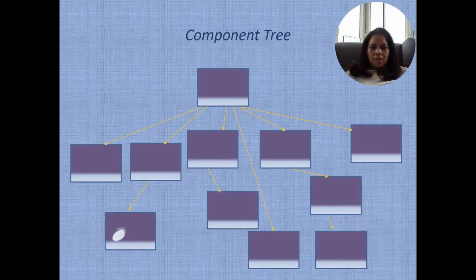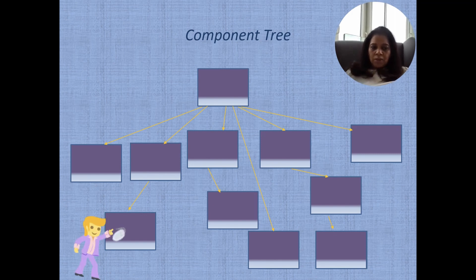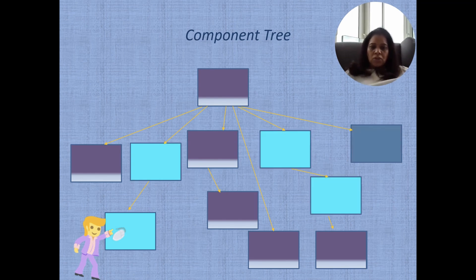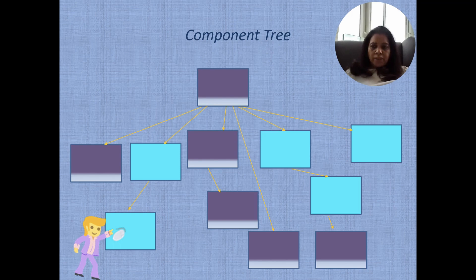Let's consider a component tree. A user clicks on a component, selects a theme, and clicks on a button. The theme changes, and there are other components using the same theme, so all those components also get re-rendered.